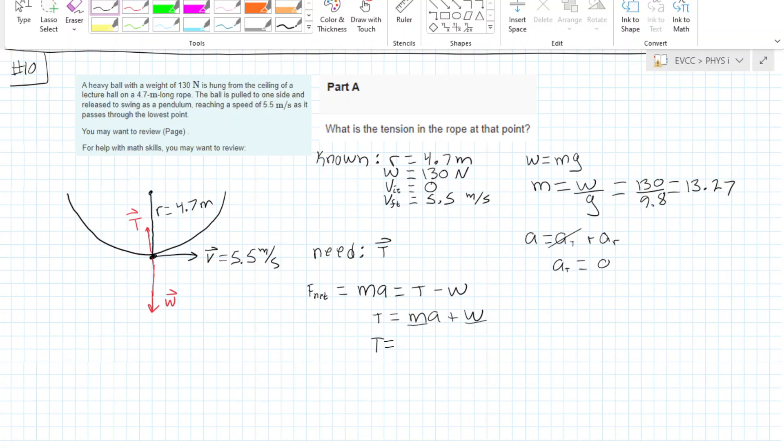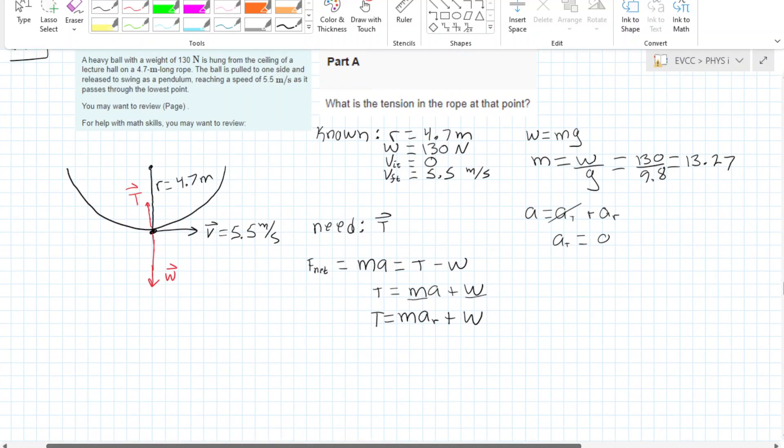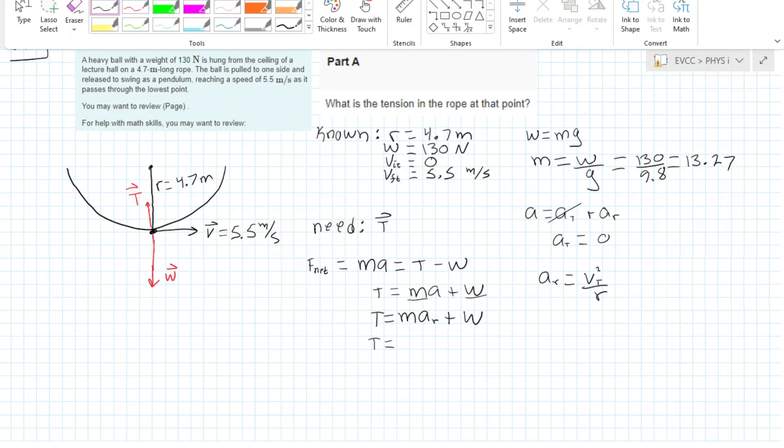We know that our radial acceleration is also equal to velocity tangential squared over radius, and these are numbers that we actually have here. So now we have something to plug in for each of these in order to solve for the tension.